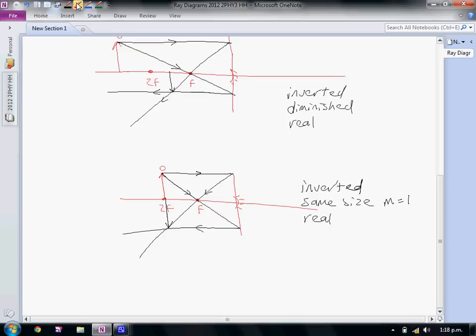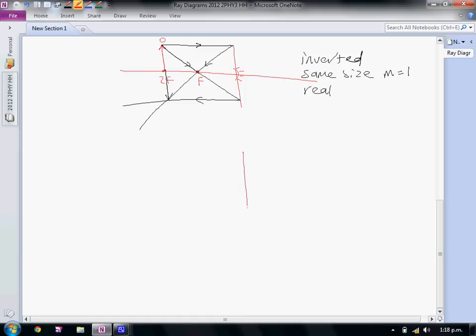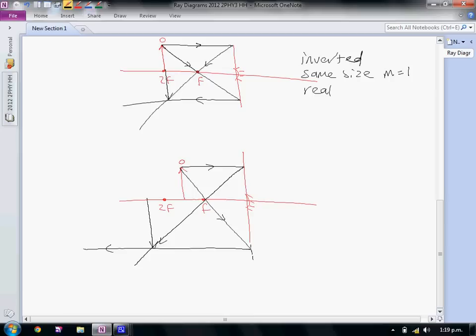This time we're going to put the object between f and 2f. Parallel light ray through the focal point, through the focal point reflecting parallel. This is what we're expecting because as we get closer to the focal point with our object, our image is going to get larger and closer to infinity. It's inverted, magnified, and still real.